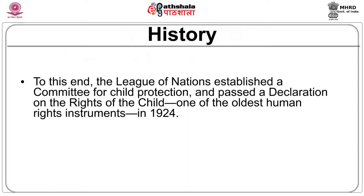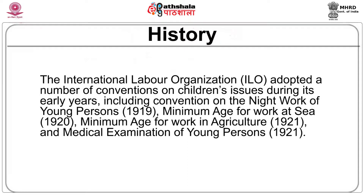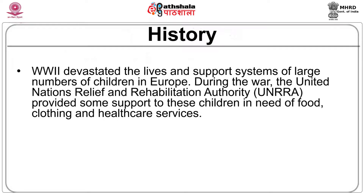This is one of the oldest human rights instruments, and dates back to 1924. The International Labour Organization, or the ILO, adopted a number of conventions on children's issues during its early years, including the convention on the night work of young persons 1919, minimum age for work at sea 1920, minimum age for work in agriculture 1921, and medical examination of young persons 1921.